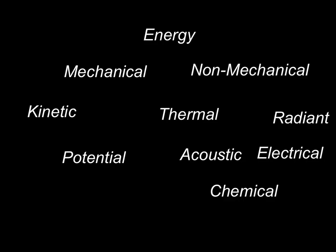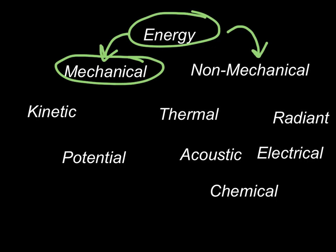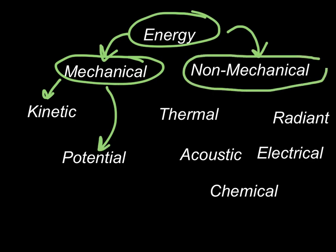So to kind of sum it up, there is energy, which can split into two categories, mechanical and non-mechanical. Within mechanical, there are two categories that we've spent a lot of time learning. Kinetic, the energy of motion. Potential, the energy of position. And now we've learned about different types of non-mechanical energy. Thermal, which is like heat, acoustic being sound. Chemical being, for example, the reactions that happen in your body or with food. Electrical, thinking about batteries, power lines, lightning. And radiant, where we think about solar energy or light, for example.